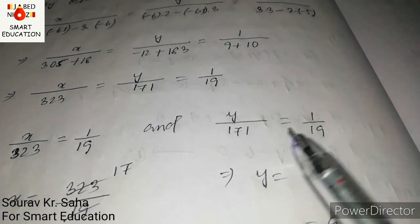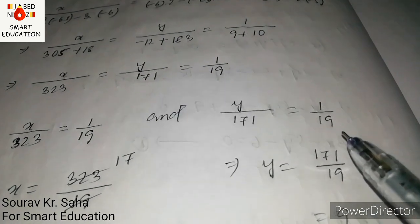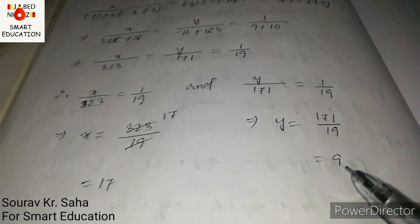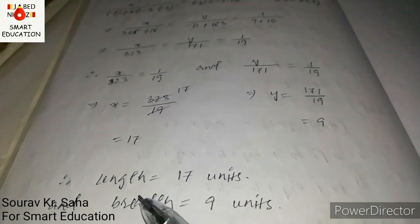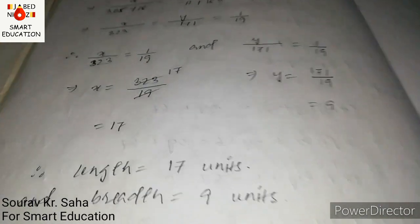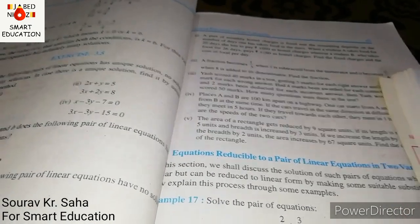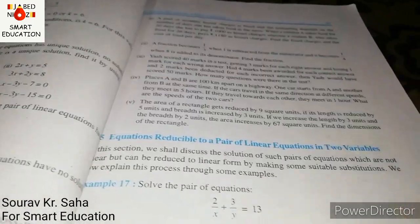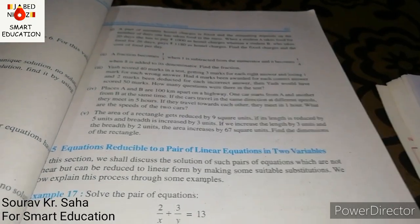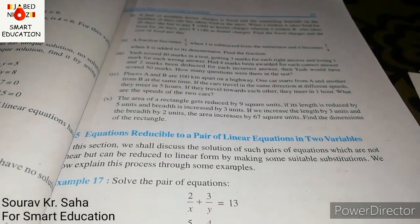From y by 171 equals 1 by 19: y = 171 ÷ 19 = 9. So the length of the rectangle is 17 units and the breadth is 9 units. This completes the examples using the cross multiplication method. The next topic will be equations reducible to pair of linear equations in two variables, covered in the next video.